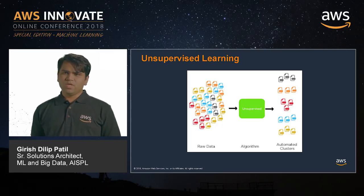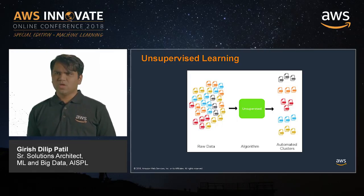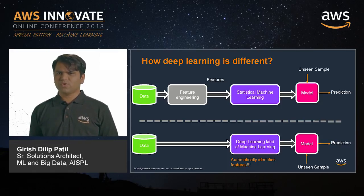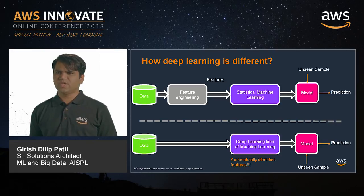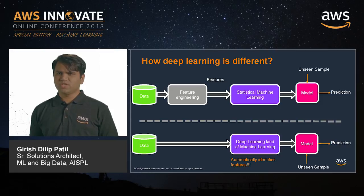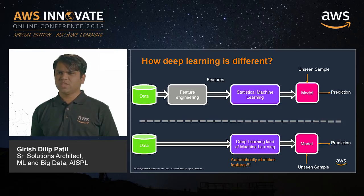Before we end this part on algorithm basics, let me quickly explain how deep learning is different from traditional statistical machine learning. In statistical machine learning, you have data, you do feature engineering to obtain features, and then you build a model to predict future outcomes.